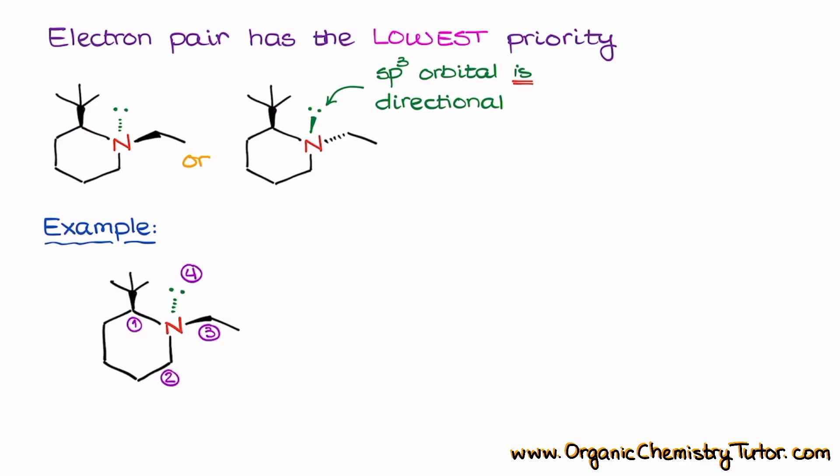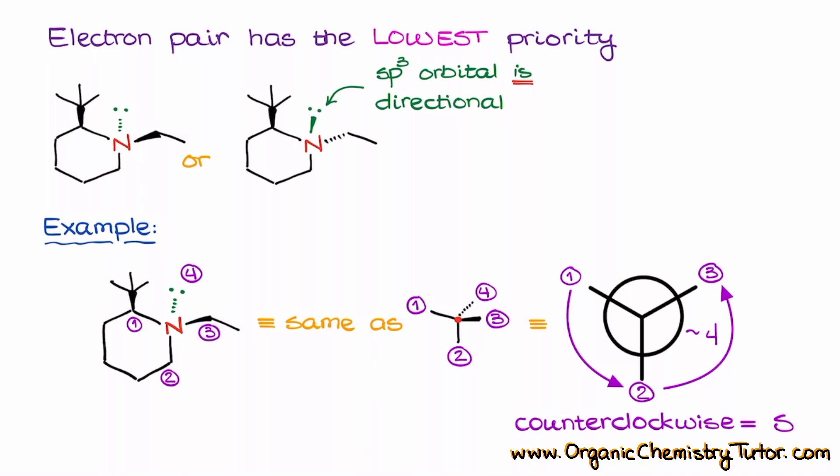So if I have my stereocenter in this particular stereo configuration with the lowest priority being on the dash, that means that I can very easily construct my stereocenter with the number 4 looking away, which gives me the following stereochemical assignment. I can see that the rest of my priorities are following counterclockwise pattern, which gives me the S stereo configuration for this molecule.